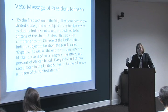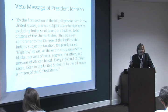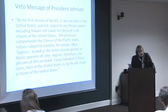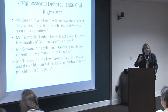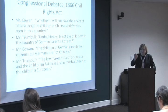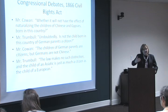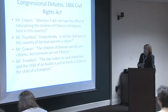Congress fairly easily overrode this veto. But there was sufficient doubt about Congress's authority in this area that the decision was made to include it in the Constitution — in the 14th Amendment. The 14th Amendment does a lot of things: it includes the due process and equal protection clause, some of the most litigated parts of the Constitution today. The idea was to put it into the Constitution to allay these doubts about constitutionality that the President and others had raised.